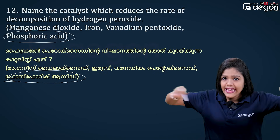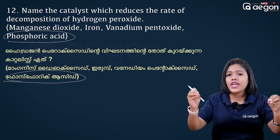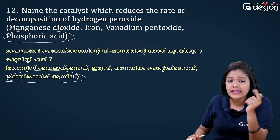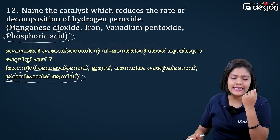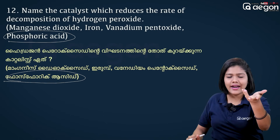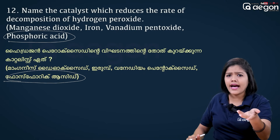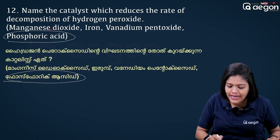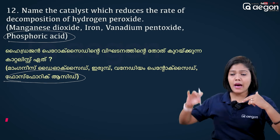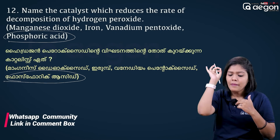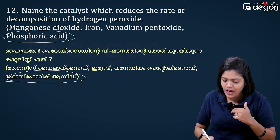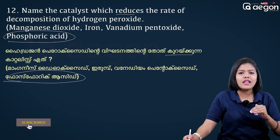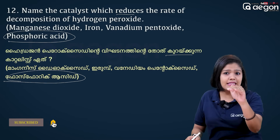Hydrogen peroxide decomposes, and phosphoric acid reduces that decomposition rate — it is a negative catalyst. Manganese dioxide, on the other hand, is a positive catalyst that increases the decomposition rate. The question asks how we reduce the decomposition — the answer is phosphoric acid.